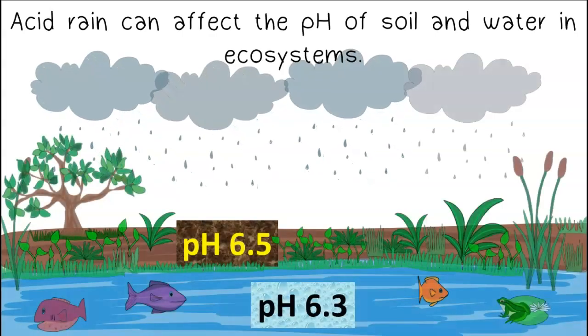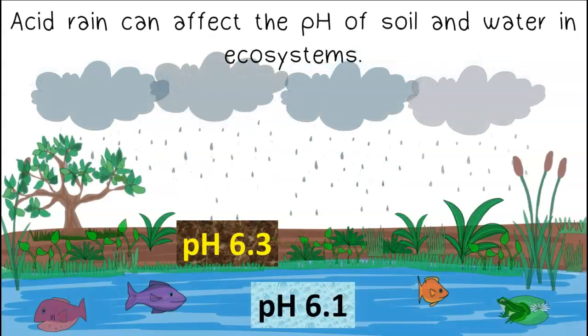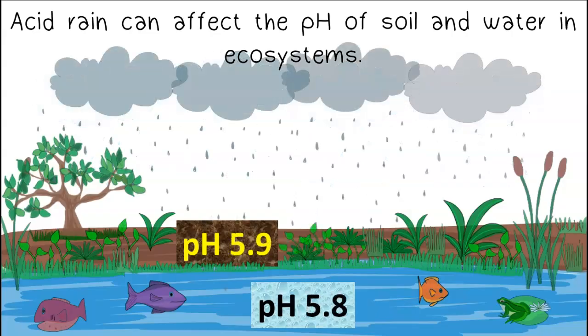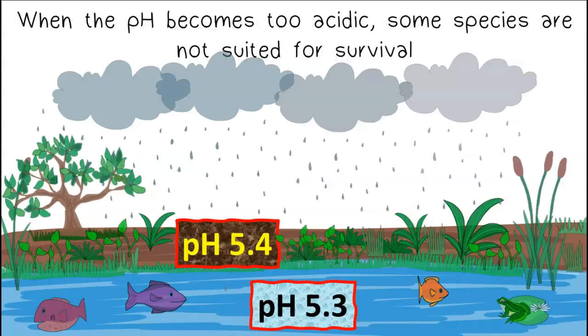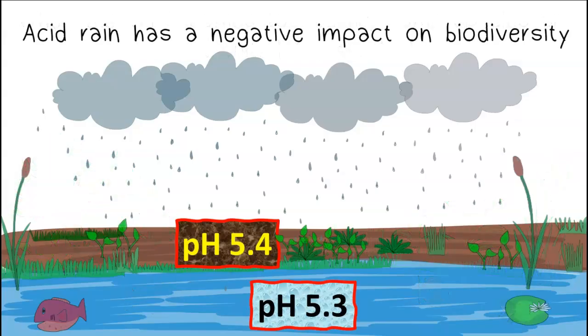Acid rain can affect the pH of soil and water in ecosystems. When the pH becomes too acidic, some species are not suited for survival. Acid rain has a negative impact on biodiversity.